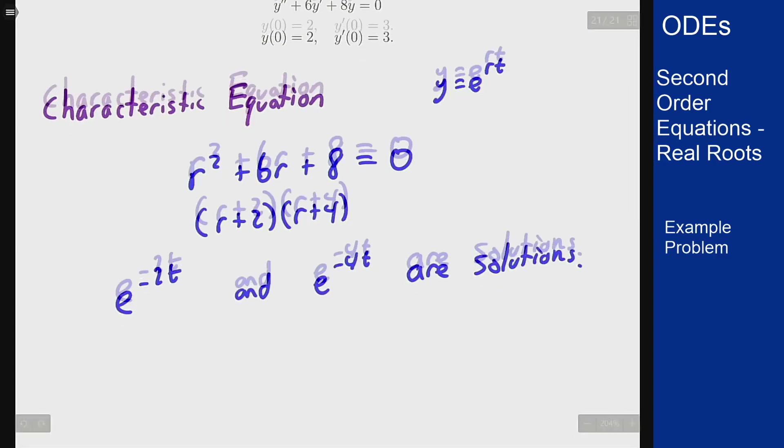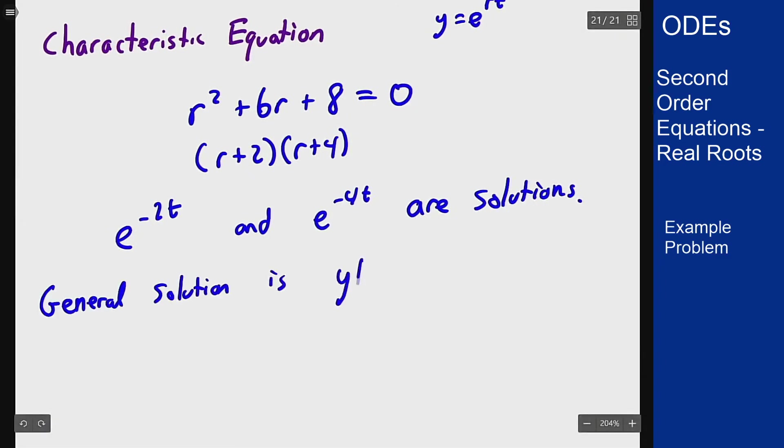Therefore the general solution is y of t equals c1 e to the minus 2t plus c2 e to the minus 4t.